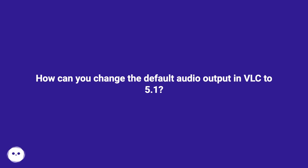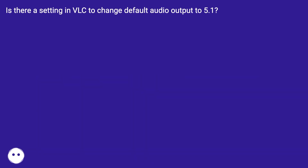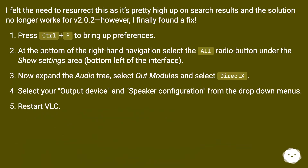How can you change the default audio output in VLC to 5.1? Is there a setting in VLC to change the default audio output to 5.1? I felt the need to resurrect this as it's pretty high up on search results and the solution no longer works for version 2.0.2.